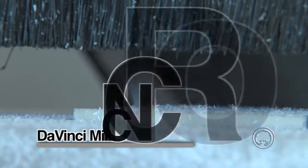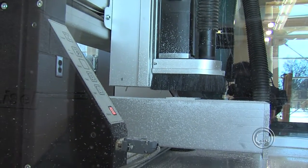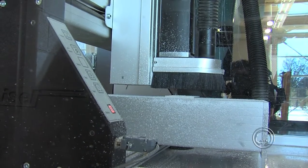And then we have a DaVinci mill, which is a smaller version of the ShopBot for making smaller products. It's basically a CNC router as well.